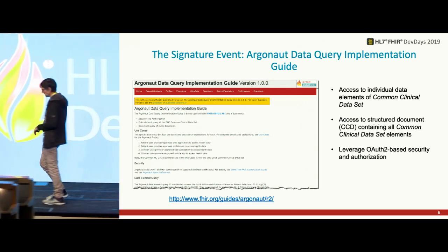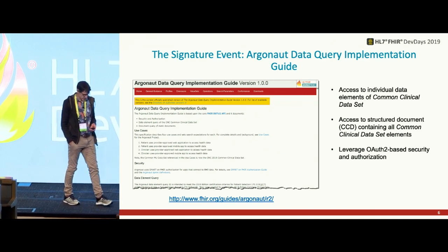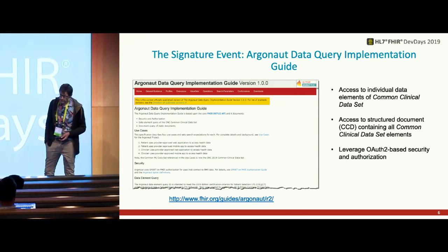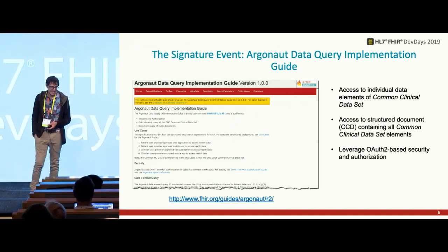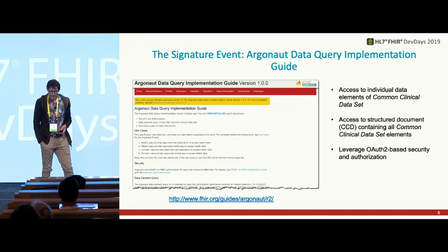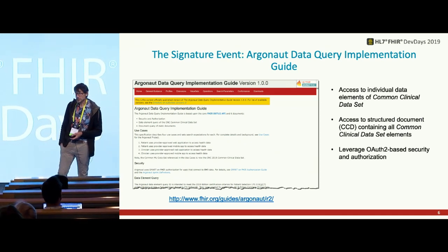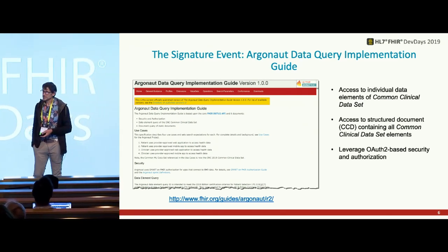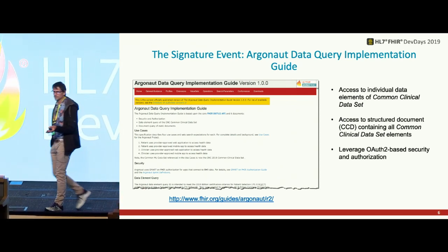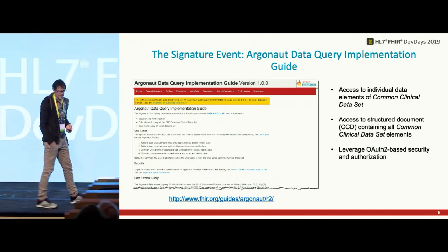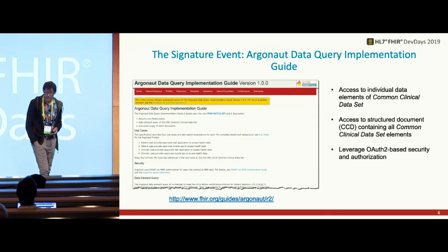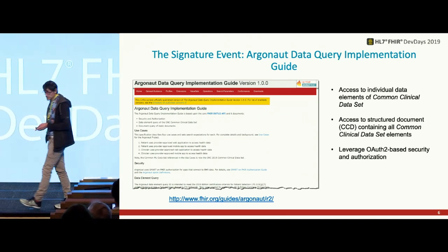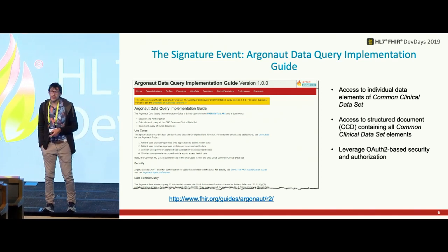The signature event in the Argonaut Project was publishing the Argonaut Data Query Implementation Guide. It provided access to individual data elements in the Common Clinical Data Set from Meaningful Use 2015 — the CCDS. Also in that guide, little-known fact, we had a way to access the CCDA — a summary document — and we also leveraged OAuth-based security and authorization work done through Argonaut and through SMART. This guide is colloquially known as the Argonaut Guide.